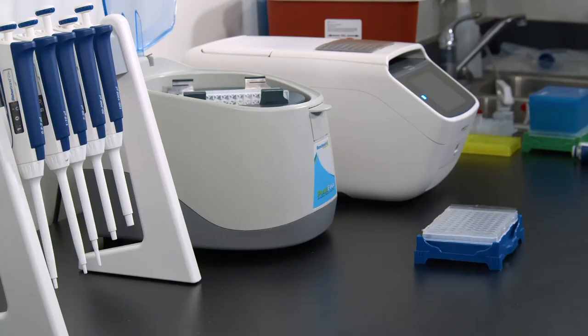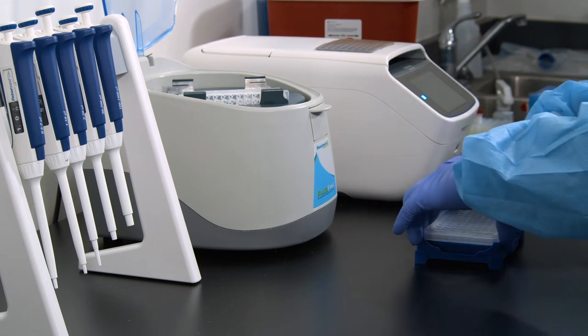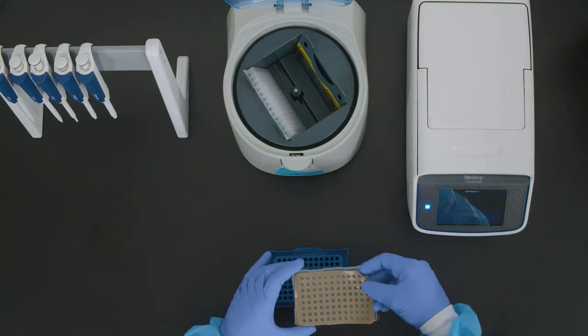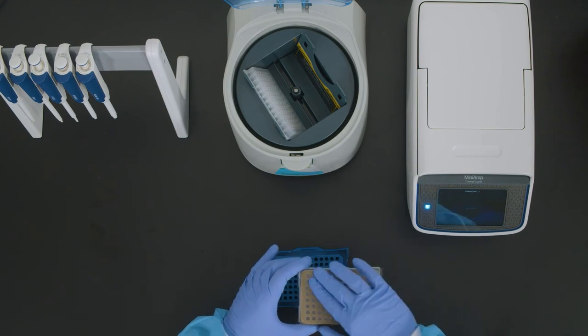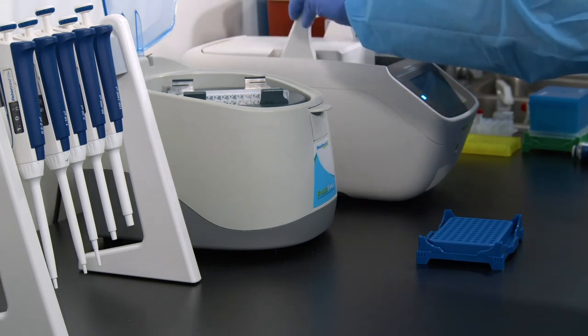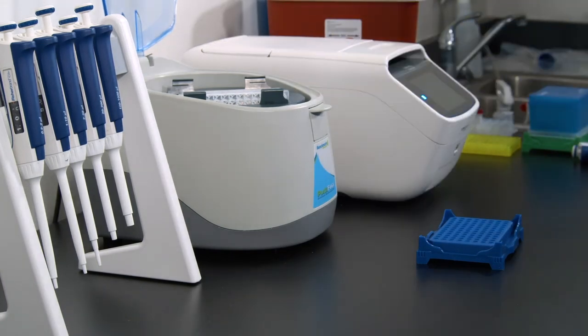In the post-PCR area, place the plate inside the thermal cycler. If a pressure pad is required, ensure it is seated correctly with the gray side down lined up with the wells. Close the lid and select the thermal cycling program. Hit run.